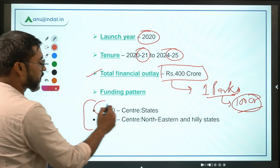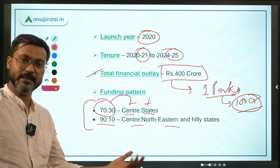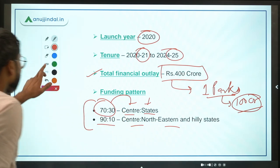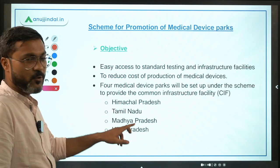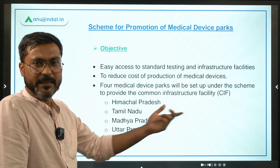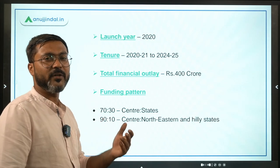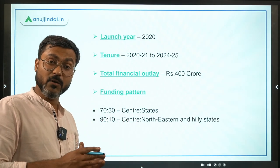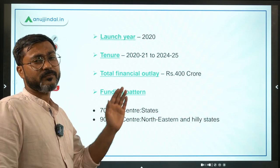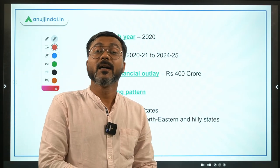The funding pattern is 70:30 between centre and states, while it is 90:10 in the case of northeastern and hilly states. Among the four selected states, Tamil Nadu, Madhya Pradesh, and Uttar Pradesh are normal states, while Himachal Pradesh comes under the northeastern and hilly states category. For Himachal Pradesh, the government will bear 90% of the project cost, subject to a maximum of 100 crores; for the other three states, the centre will bear 70%, again subject to a maximum of 100 crores.